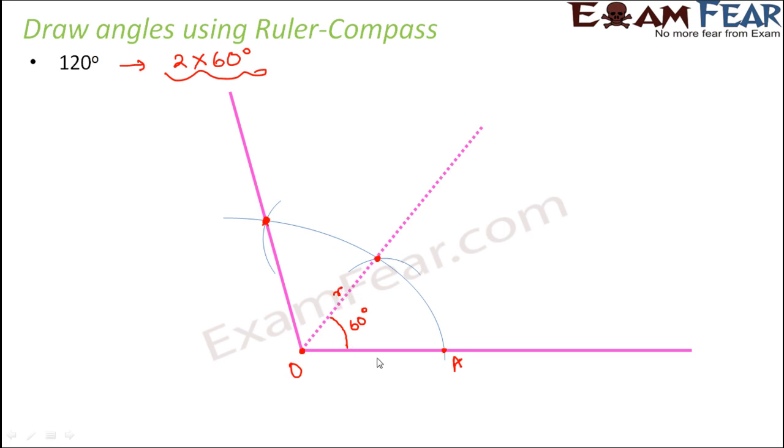As per what we learned in the previous slide, this was r, this was r, and this was also r. We had proved that in the previous slide. Now here, with the same measurement of the compass, we had drawn this arc also, which means that this is also r. And this is anyways r because this is the radius of the same arc.